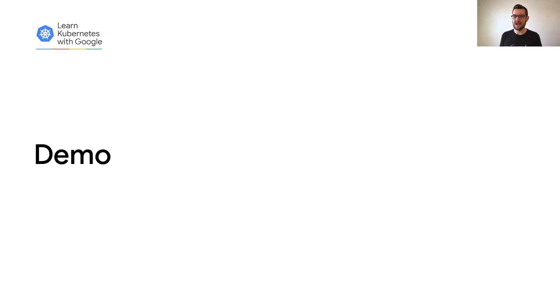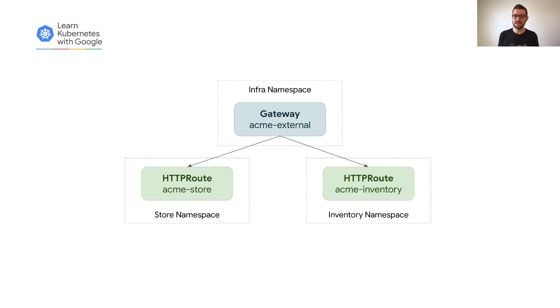With that introduction, let's take a quick look at how Acme can publish their apps. In this demo, we'll set up a simple gateway in the infra namespace and target routes in the store and inventory namespaces. This allows the store and inventory teams to separately define how traffic should be routed to their applications, all while sharing the same infrastructure. To cross the namespace boundary like this, we require a two-way handshake between routes and gateways — each have to agree to the connection.